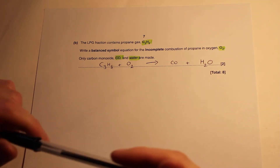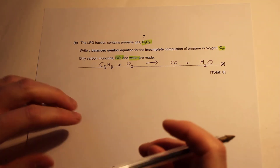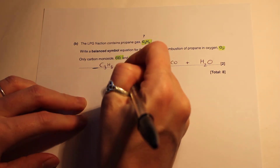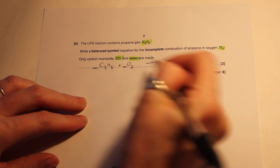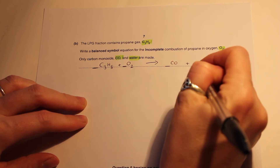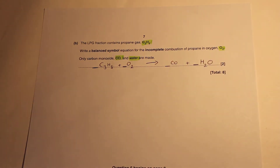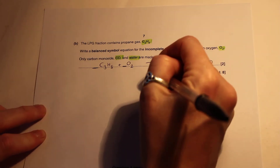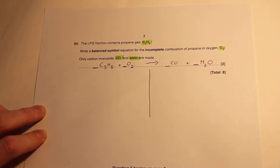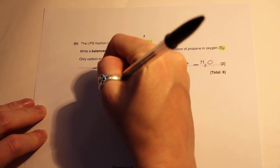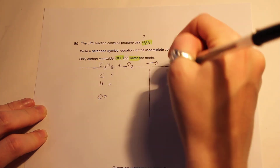Next, balance the equation. The only place we can write numbers is in front of the whole formula — that's the only place. Otherwise, we'd be changing the chemical formula, which we can't do. The way I teach my groups is to divide at the arrow, then count up how many of each atom are present.